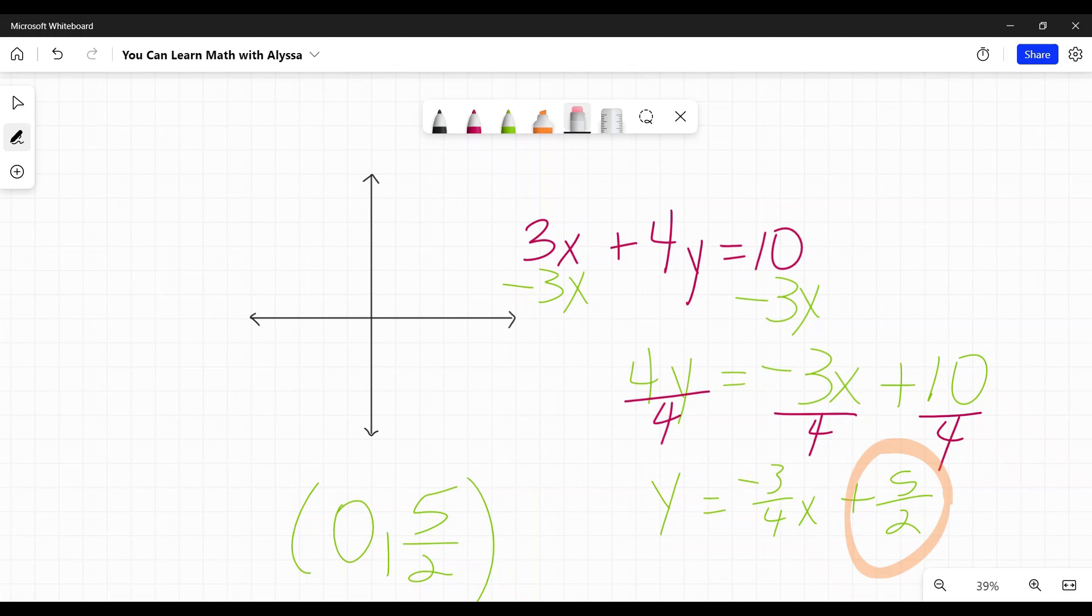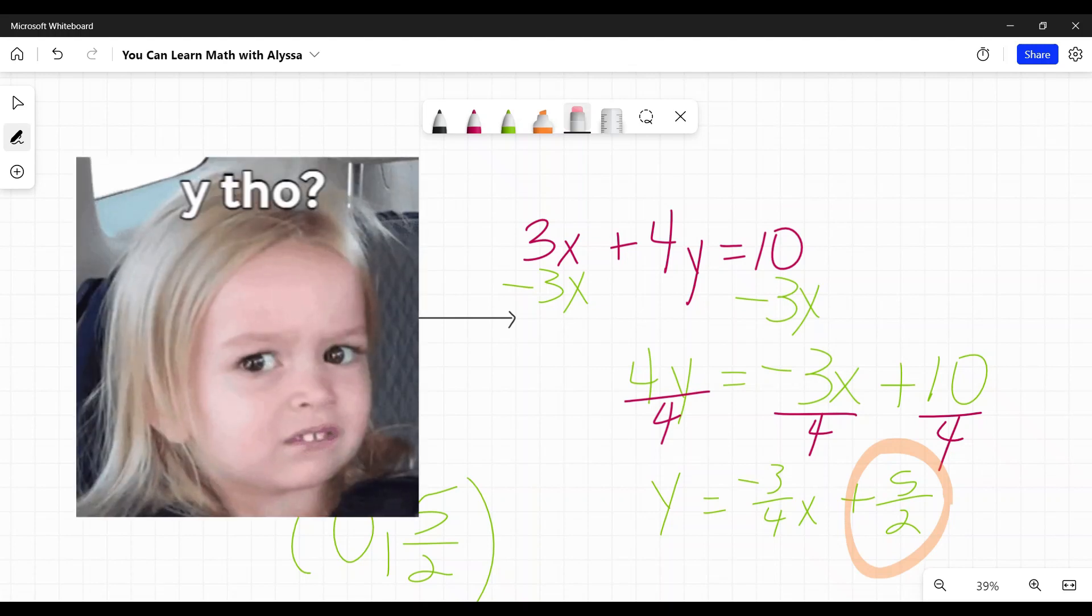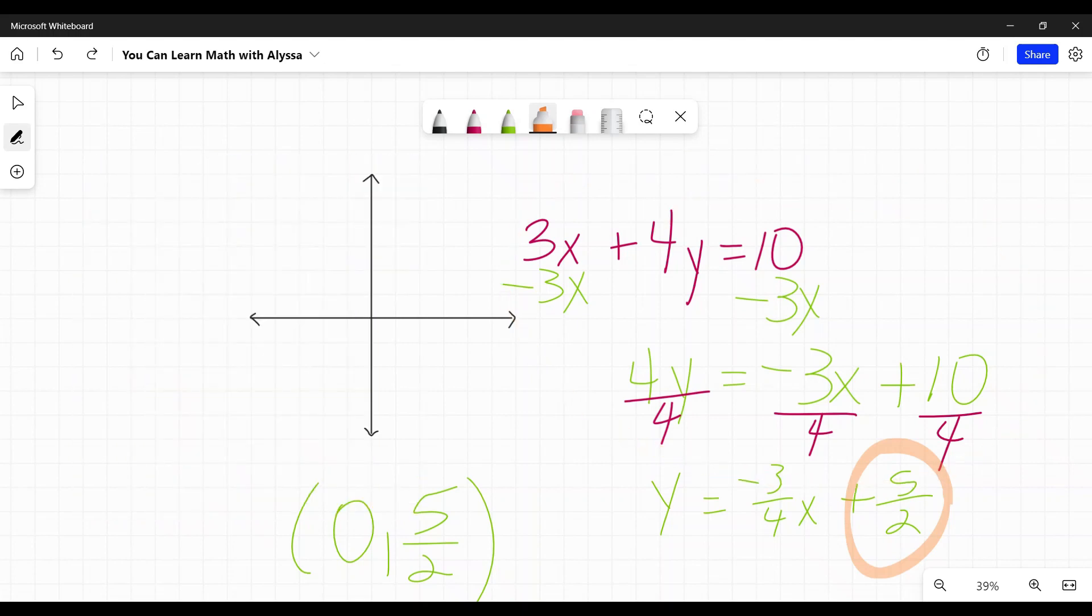Now, the reason I showed you both ways, because you're like, but if you just do this y-intercept, why don't you just do that every time? So you only have to remember one thing. Well, if all we ever dealt with were lines, I'd say go for it. But you know it's not going to stay that simple for long, right? You know they're going to make it harder on you.